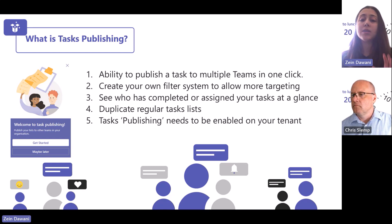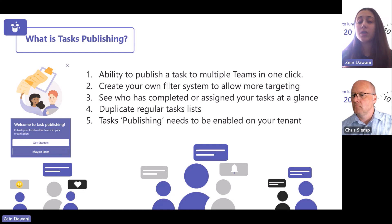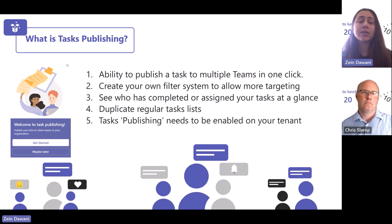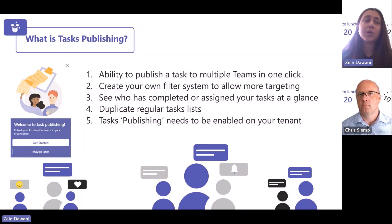This slide summarizes Tasks Publishing in five main points. First, it allows you to publish a task to multiple Teams in one click — very easy to set up and send out to the entire organization no matter how large. Second, you can filter tasks to target a specific part of the organization. Third, you can see who has completed and assigned tasks at a single glance on one page. Fourth, you can duplicate regular task lists — so if tasks must be done monthly, you can just duplicate the same list instead of recreating it. And lastly, Tasks Publishing needs to be enabled in your tenant to use these features.